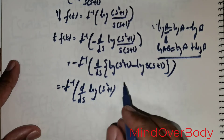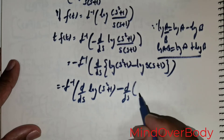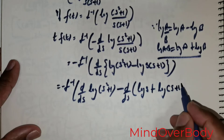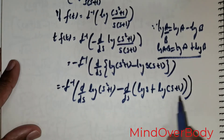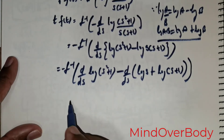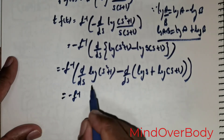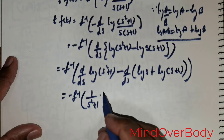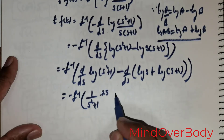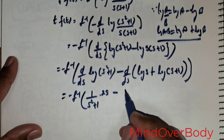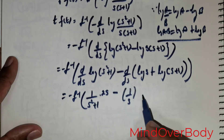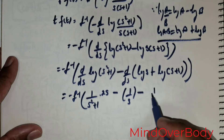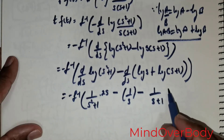I am bringing d over ds inside. So this is going to be d over ds of log s plus log of s plus 1. Now, differentiating log of s squared plus 1 gives 1 over s squared plus 1 times 2s. Then d over ds of log s gives 1 over s, with a negative sign. And negative differentiation of log of s plus 1 gives 1 over s plus 1.